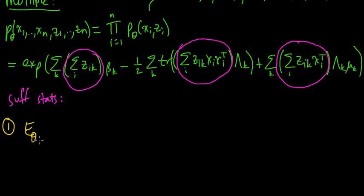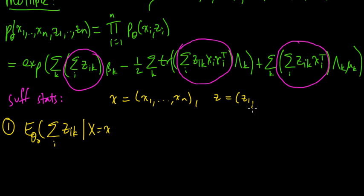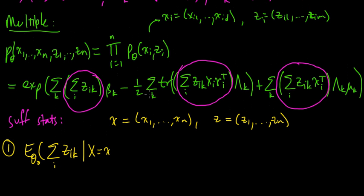This one, so this is the first one, the expected value under theta zero, the conditional expectation of the sum, just this function here, this part of the sufficient statistics, given that x equals little x. And here x, I'm using x, or little x, to be this sequence of observations, x1 up to xn. And I'm going to use z for the sequence of z's, z1 up to zn. And each of these is a vector. That was this. Each of these is one of these vectors.